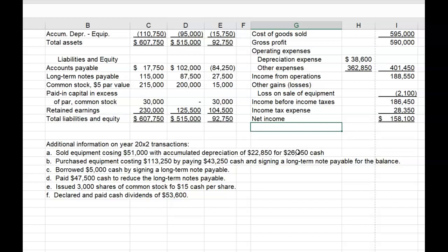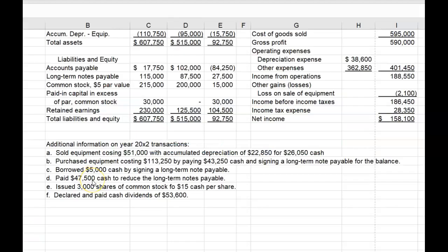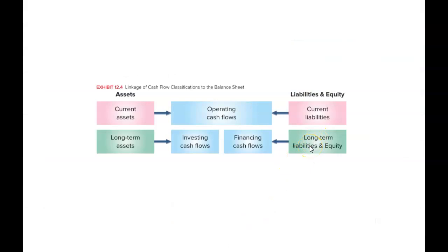Let's look at Number C: Borrowed $5,000 cash by signing a long-term note payable. This would be treated as cash received in the Financing section of the Statement of Cash Flows. Number D: Paid $47,500 to reduce long-term note payable. Changes in long-term liabilities that arise from the receipt or payment of cash all flow through the Financing section of the Statement of Cash Flows.